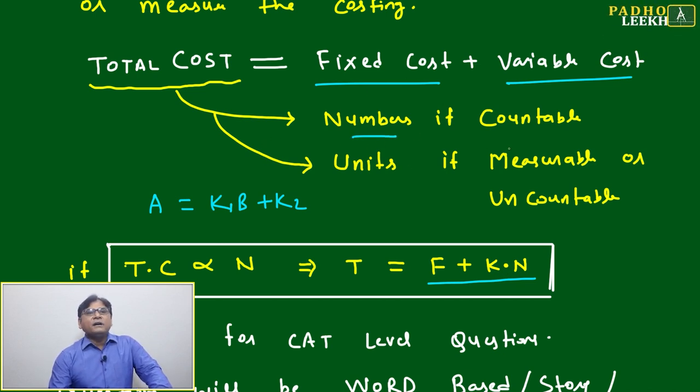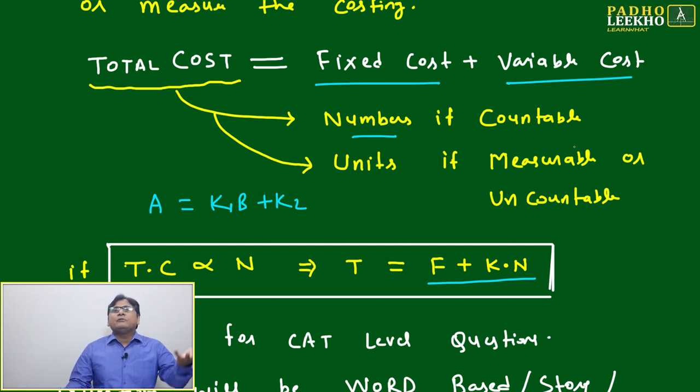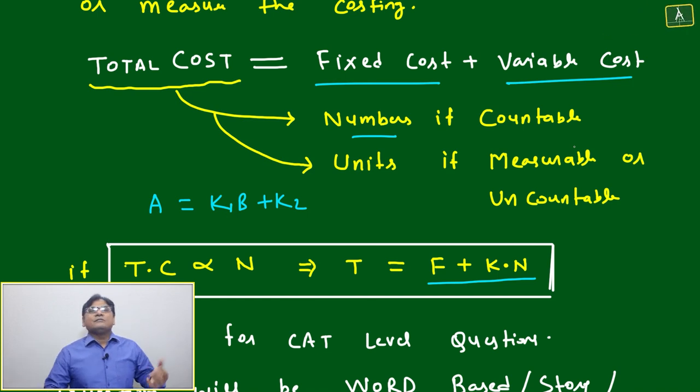Total cost will depend on numbers if countable. If you are dealing with any countable noun, like persons or any product or any things that are countable, then you can say it will depend on N that can be counted.